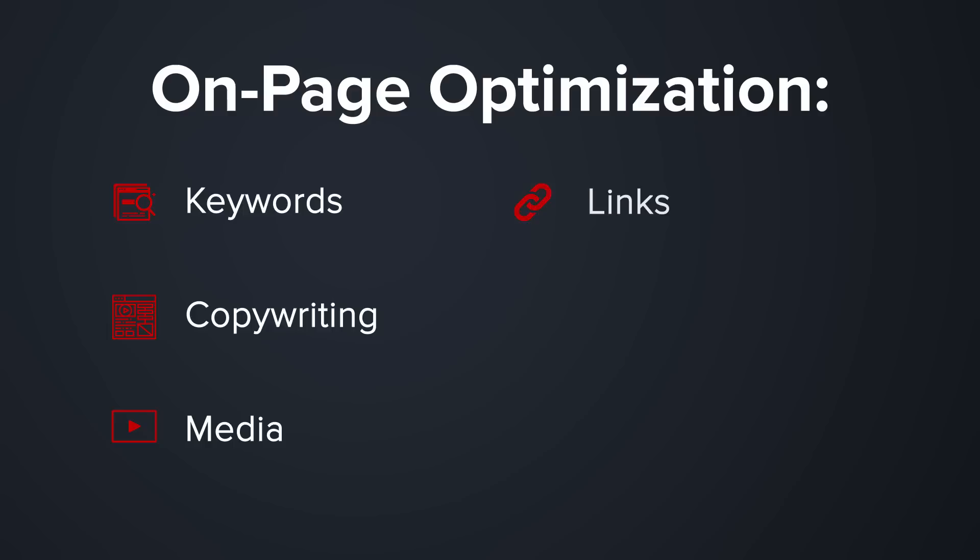Why is on-page SEO important? Most people with basic knowledge of SEO usually equate on-page SEO with just placing keywords on a page. There's no denying that keywords are critical, but there's much more to the process. On-page optimization includes keywords, copywriting, media, links, user experience, and even conversions. Understanding and executing all of these on-page SEO factors is important because it will determine how well your page will rank in Google.